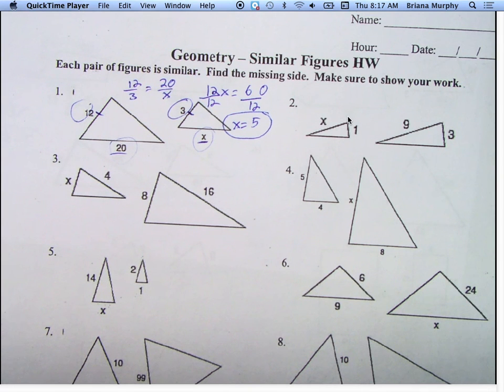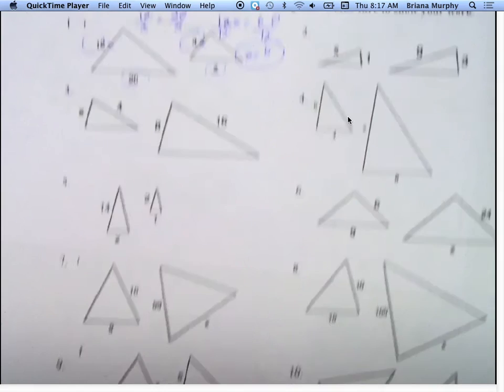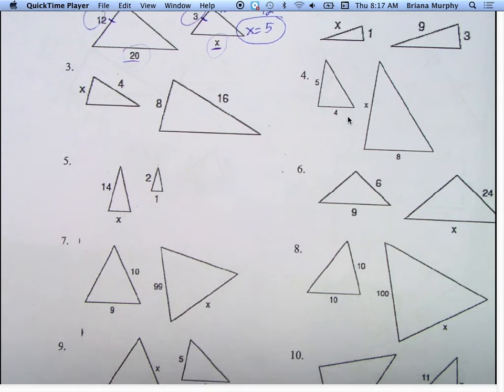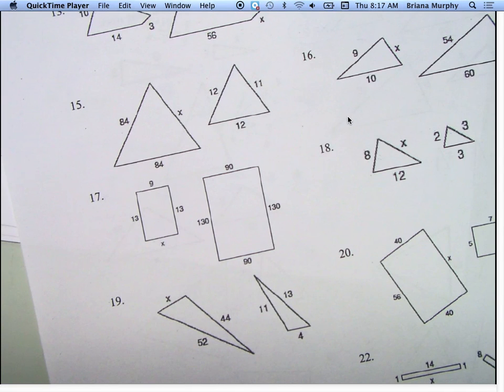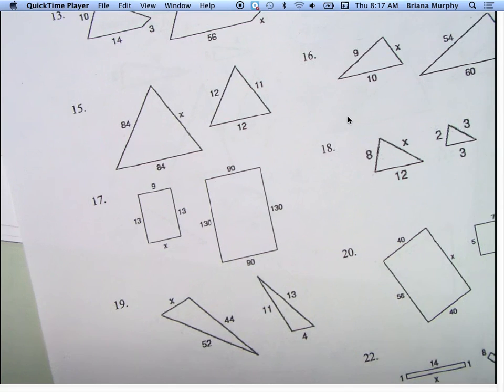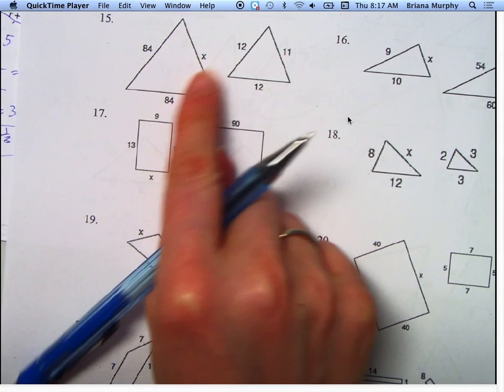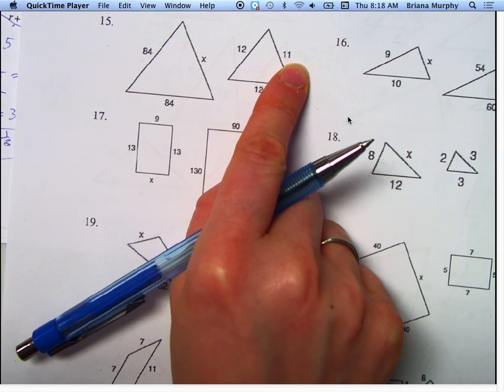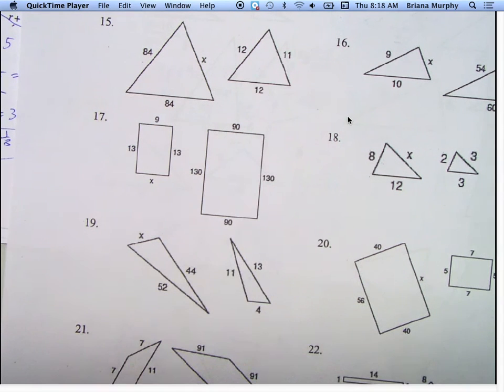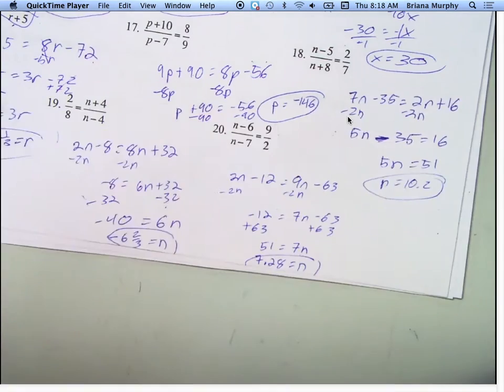Just remember some of them are turned, like number 7 is turned funny. Make sure you match the ones that go together. If there's more than one side, you don't have to do it. Like I can do 84 and 12 and X and 11 here. I don't have to do three different equations just because they're there. Just have to pick the correct ones. All right, you have the rest of the hour to work on your homework.